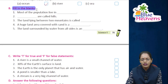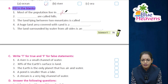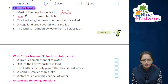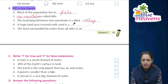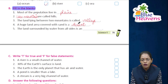Exercise B — fill in the blanks. Most of the population lives in plains. Low mountains are called hills. The land lying between two mountains is called a valley. A huge land area covered with sand is a desert. The land surrounded by water from all sides is called an island.